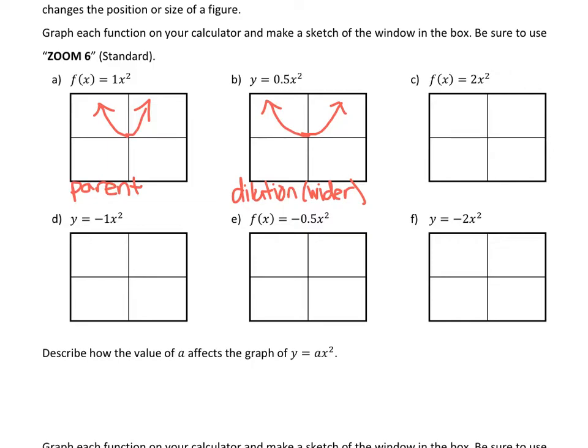Go to your y equals. Clear out y2 and replace it with 2x squared. Hit graph. It will graph the parent function first. 2x squared looks something like that, which is still a dilation, but this time it became narrower.